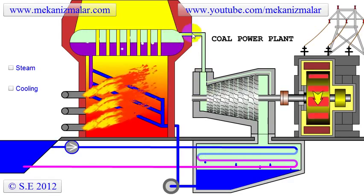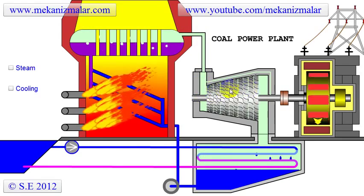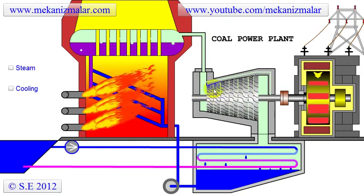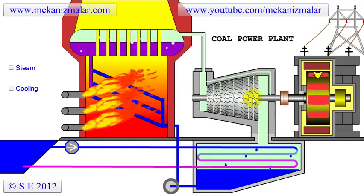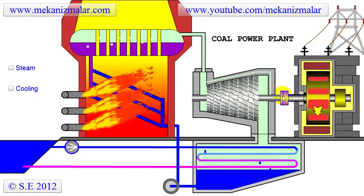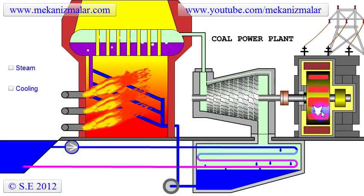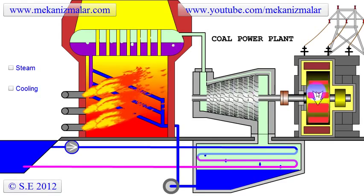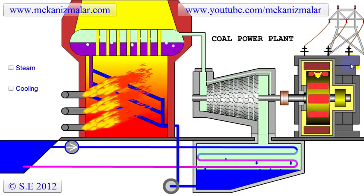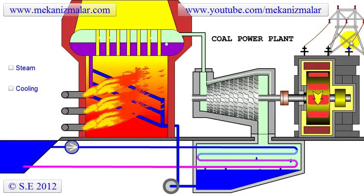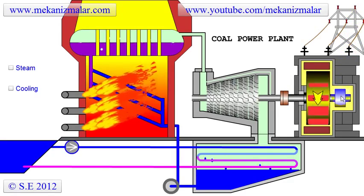The high-pressure steam is taken to the steam turbine, and the energy inside the steam is converted to mechanical energy. This mechanical energy is then transferred to the generator, where it will be converted to electricity. The generated electricity is finally transferred to the grid through a transformer and is ready to be consumed by the public.